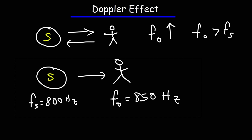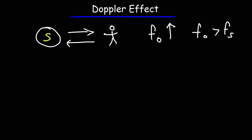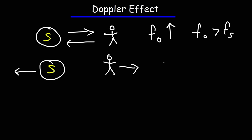Whenever the source or the observer moves toward each other, the observed frequency is going to be bigger than the source frequency. The reverse is true: if the source is moving away from the observer, or if the observer is moving away from the source, then the frequency detected by the observer is going to decrease — it's going to be less than the original frequency emitted by the source.